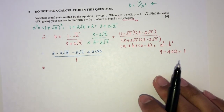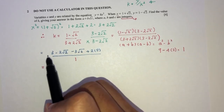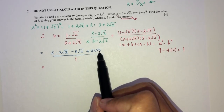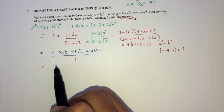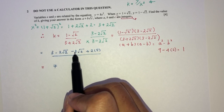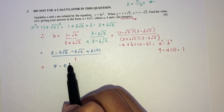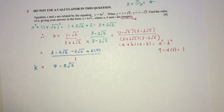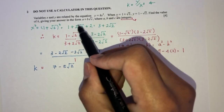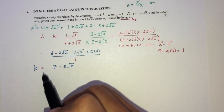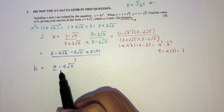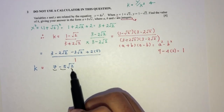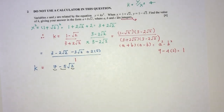So let's simplify. On top you have 3 plus 4 which is 7, minus 2 root 2 minus 3 root 2 which is minus 5 root 2. And that will be your value of k — which is 7 minus 5 root 2 — where by comparison a is 7, b is minus 5, and c is 2. All these values are whole numbers; they are integers. That is your value of k.